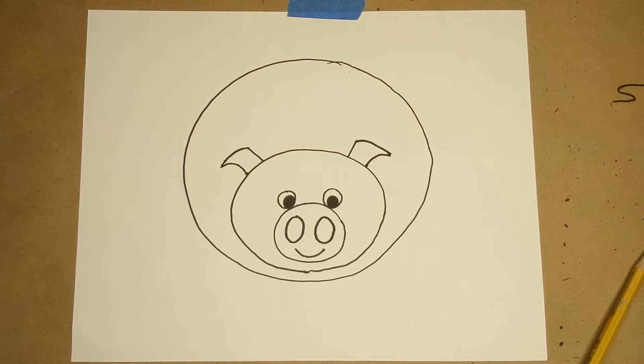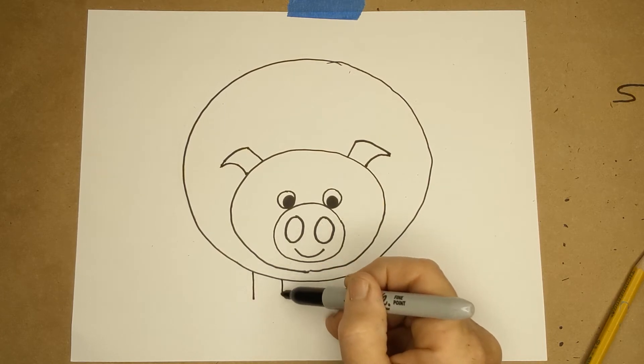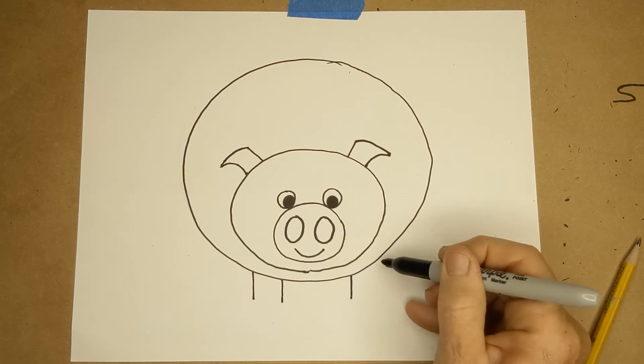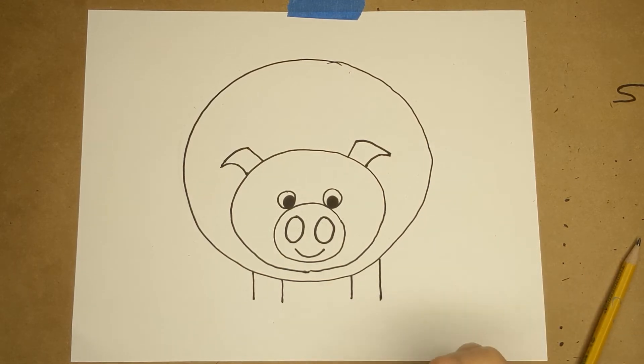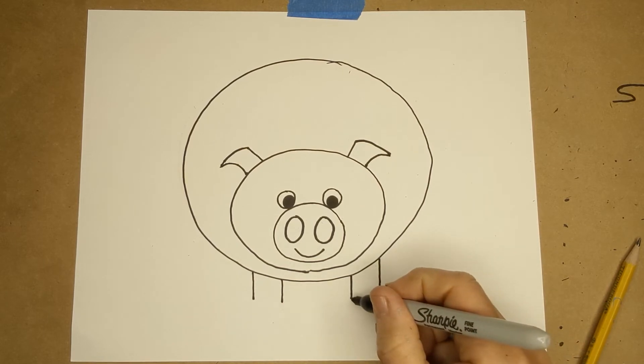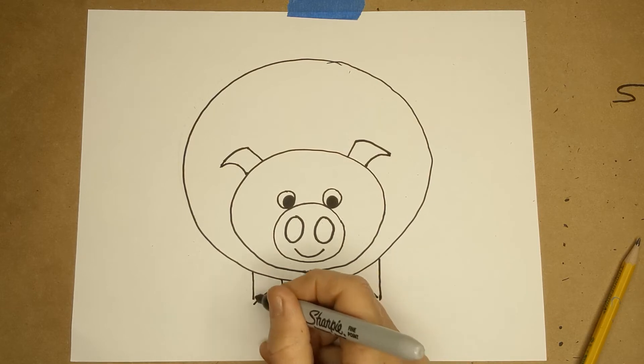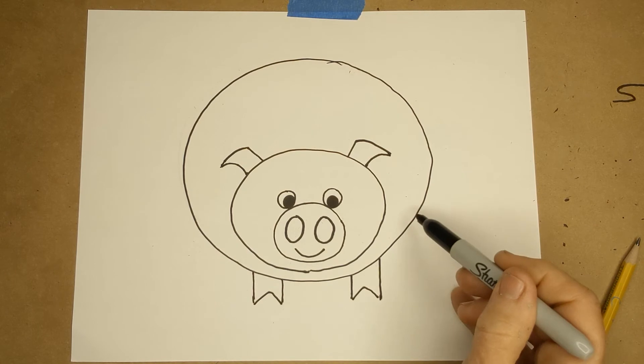Now he does need little feet, his front feet. You want to start with one line, two lines. Try not to make him too skinny. One line, two lines. Then we're just gonna put like a little V going up. One, two. See his cute little toes?